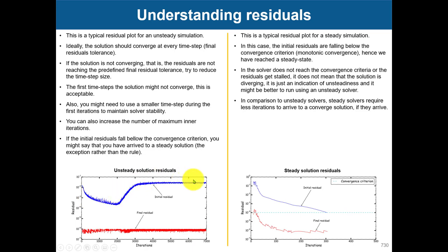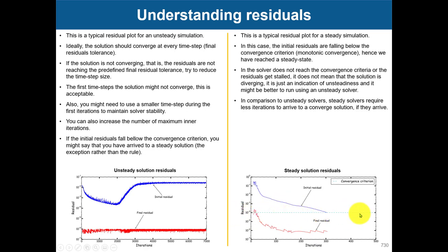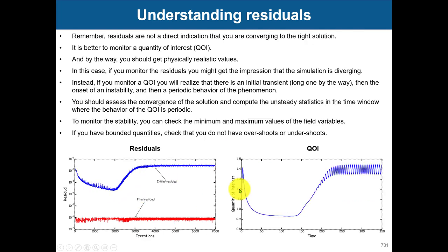If your initial residuals are the same as the final residuals, you can say that you have reached a steady solution. You set a tolerance to stop, and usually your initial residuals reach a tolerance around 10 to the minus 4 — you can say that is a steady solution. You can also put the same tolerance as the final residuals. Be careful though: at the beginning it may appear that it's going to reach 10 to the minus 4 and then you have that unsteady onset, so be cautious.